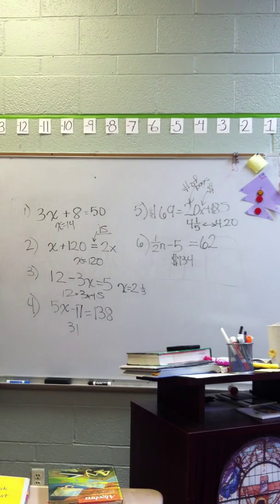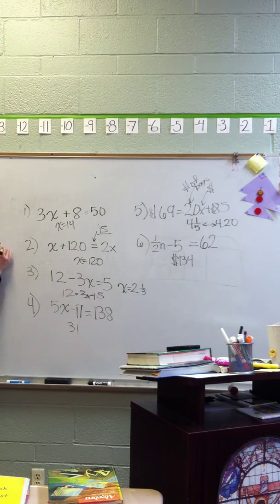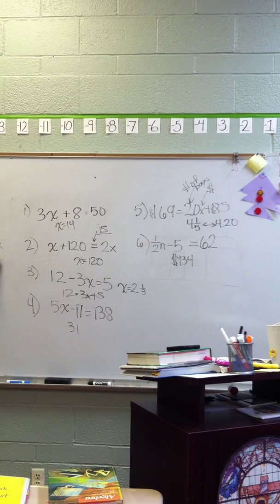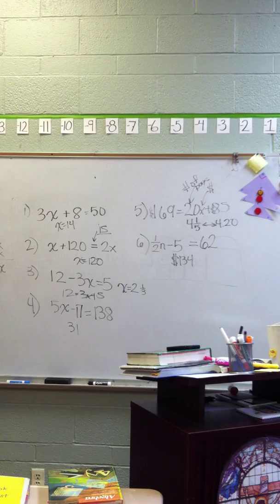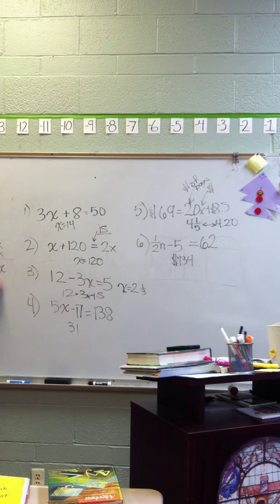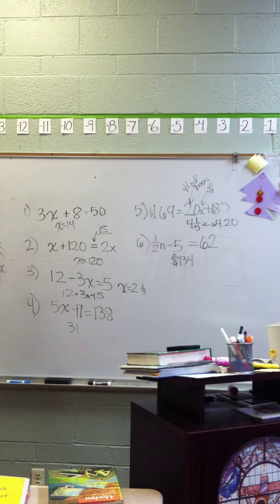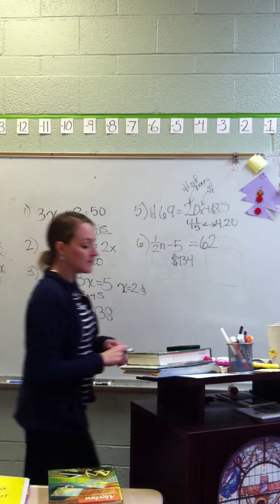So I have x plus 120 is equal to 2x. The first thing I'm going to do is subtract x because it's my easiest thing to move. So I have 120 is equal to 2 minus 1 is just 1x. So x equals 120. The reason it's confusing is because that number is already there. And your brain says it's wrong, it's wrong, it's wrong. It's not.